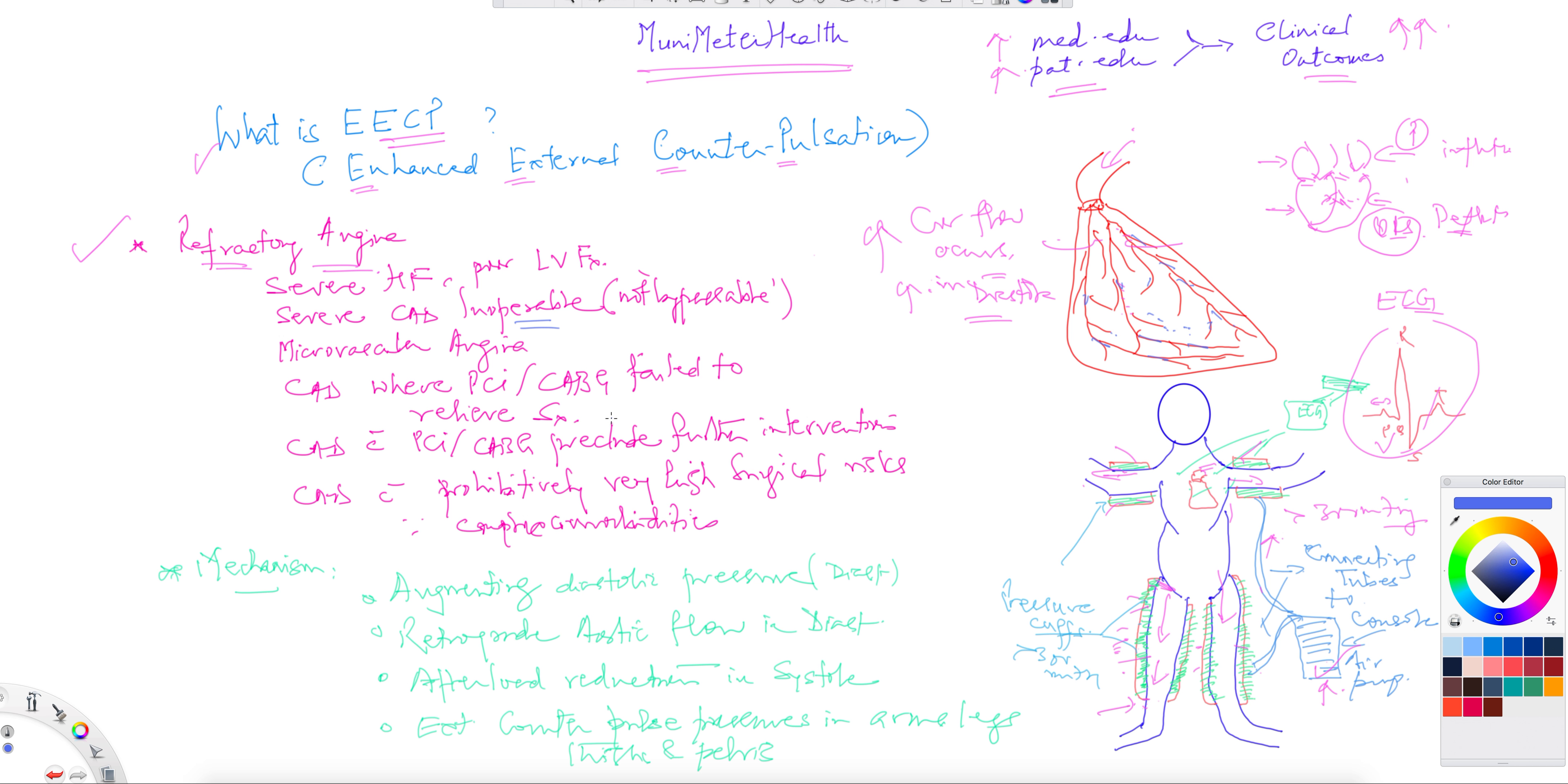Where the bypass will not work and the stents will not work, and even medical therapy has failed. When medical therapy fails and patients are still experiencing refractory angina, those are the cases. Sometimes it's inoperable or the risks are too high, prohibitively too high, and no surgeon wants to operate because they have bad kidney disease or they've had a partial stroke in the past or cerebral or other morbidities.